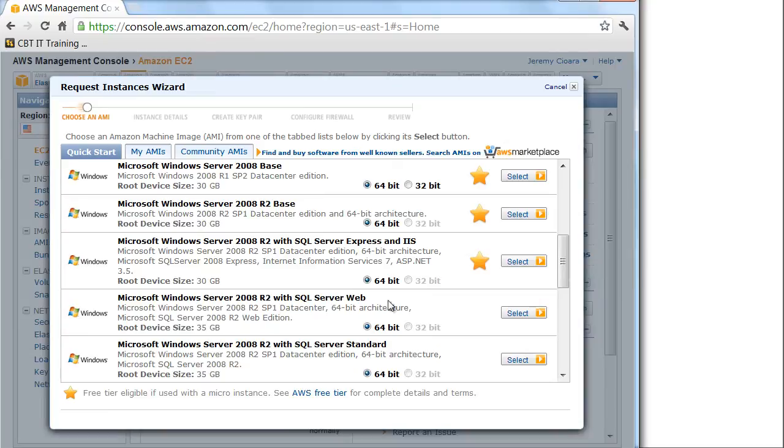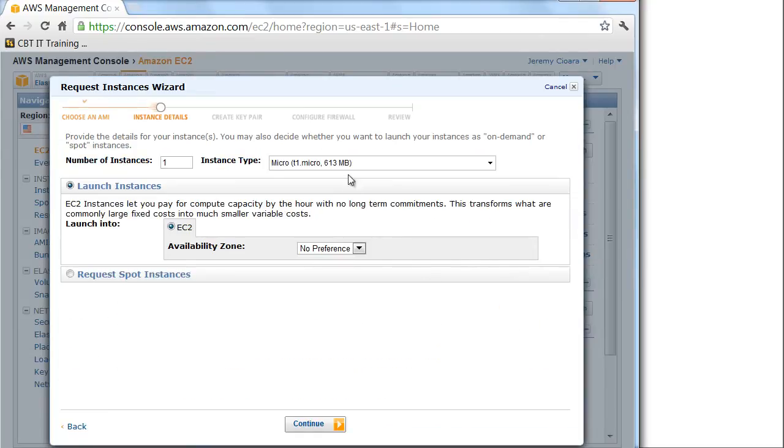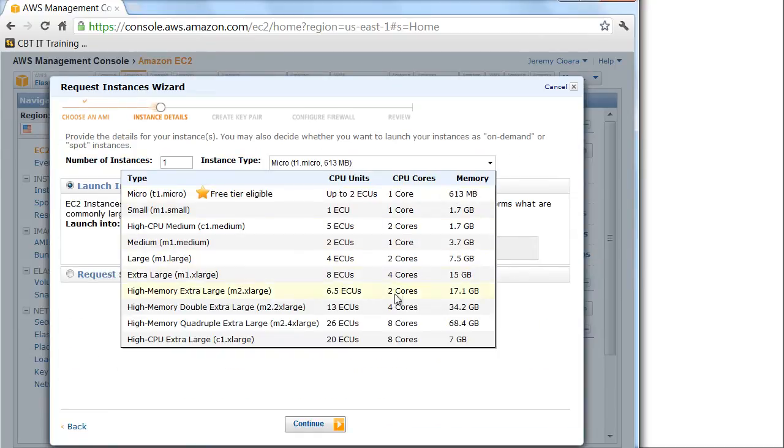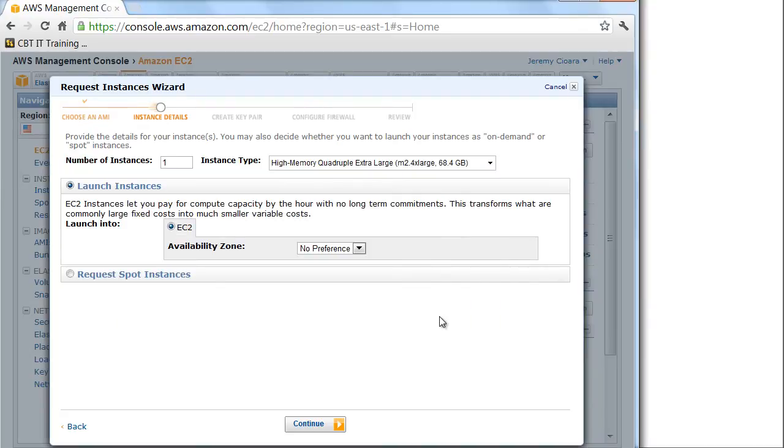Let's say I want Windows Server 2008 with SQL on it. I click on that, I say what size of server, I want an eight core, 68 gigs of RAM, quadruple extra large, this giant server.